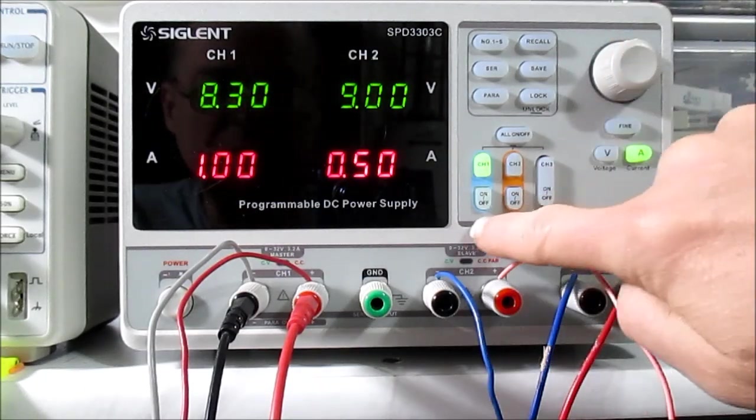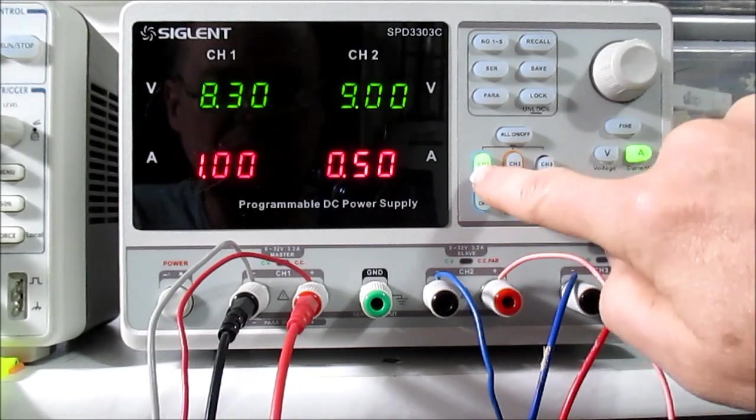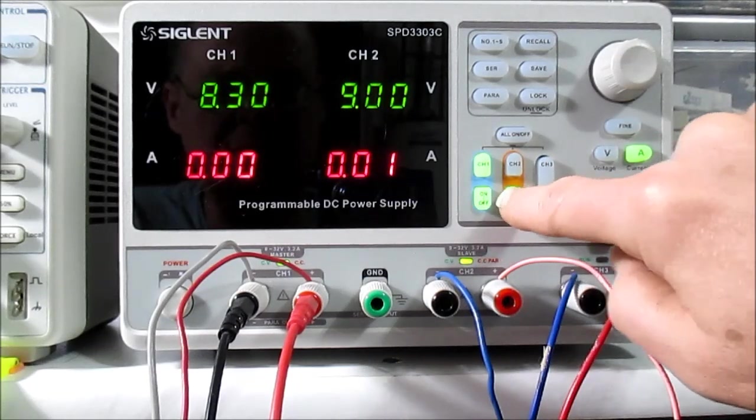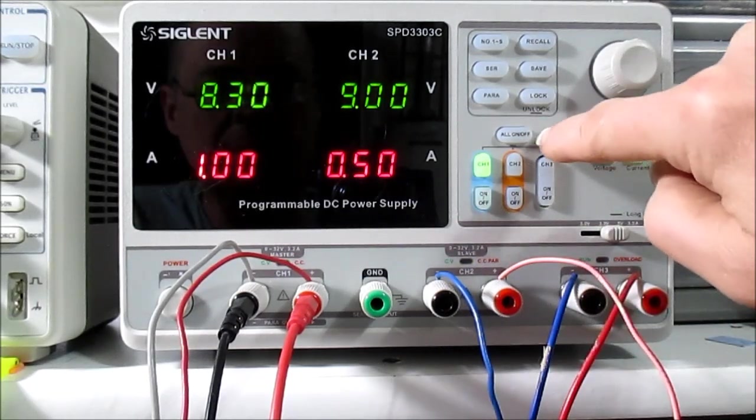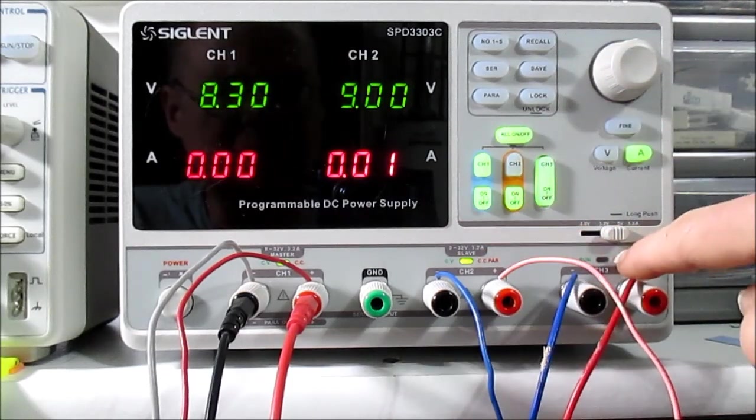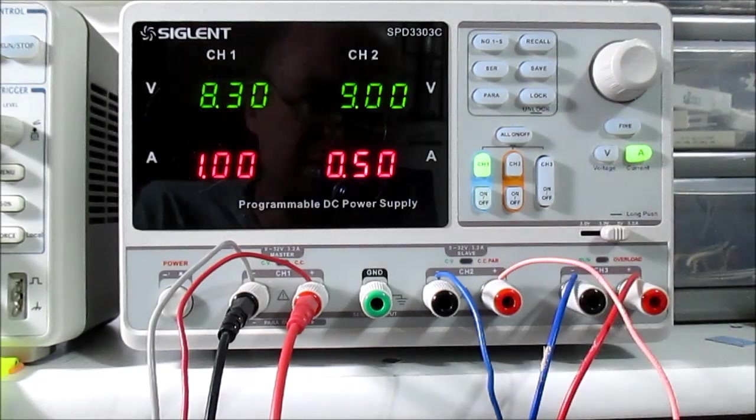And to turn the output on, you just hit the bottom button down here. So channel 1 output, turn that on. Channel 2, you can turn that on. Or you can hit this button to turn them all on. You'll get the little indicator lights below for each channel that's turned on.